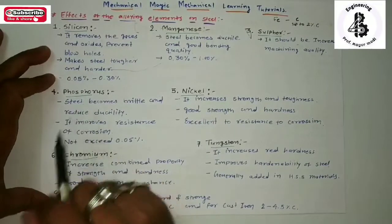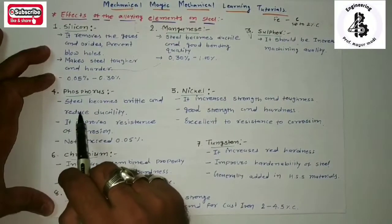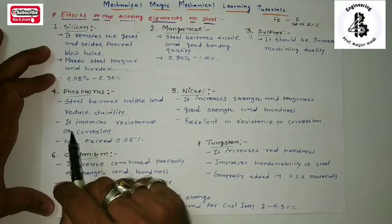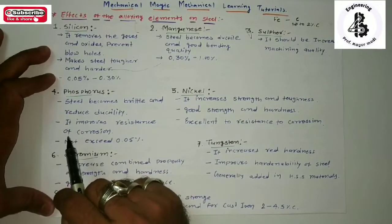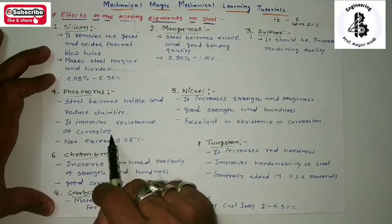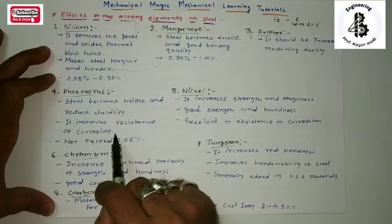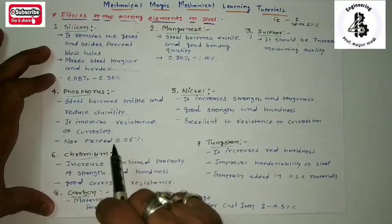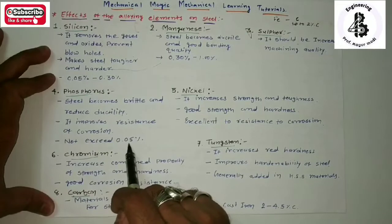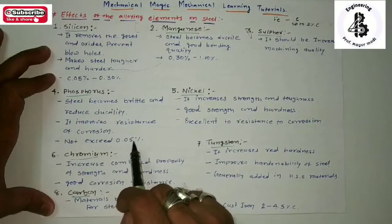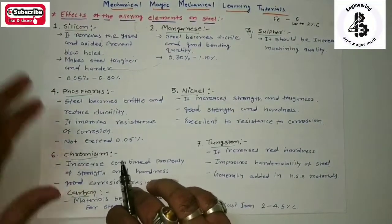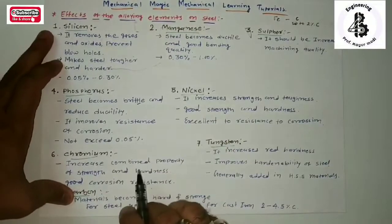Fourth element: phosphorus. By the addition of phosphorus, steel materials become brittle and have reduced ductility. It increases hardness, making cutting difficult, but also increases corrosion resistance, which is a necessary property for alloy steels. Phosphorus should not exceed 0.05% in the composition of steel. The maximum solubility of phosphorus is 0.05%. If more phosphorus is added, the material becomes totally brittle and has no applications in the field of engineering.